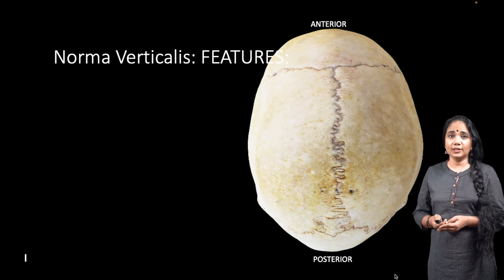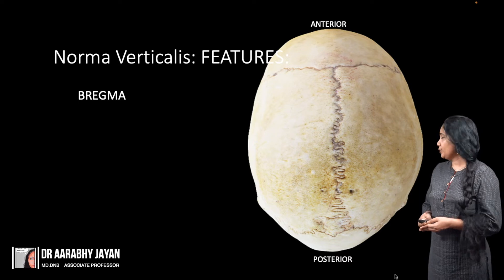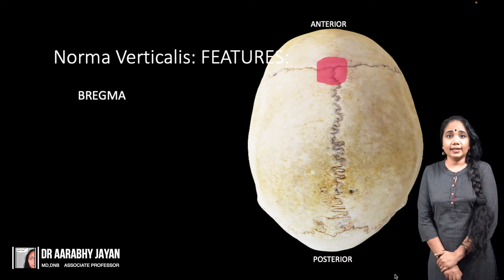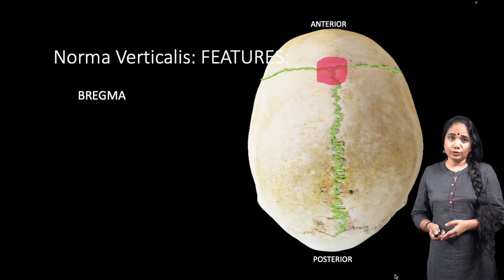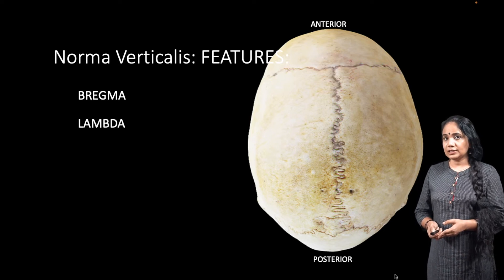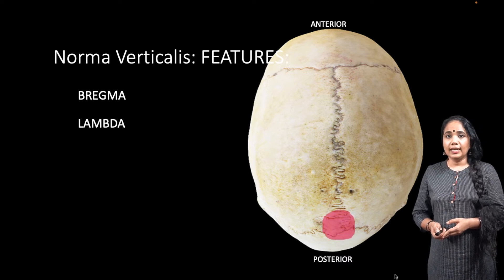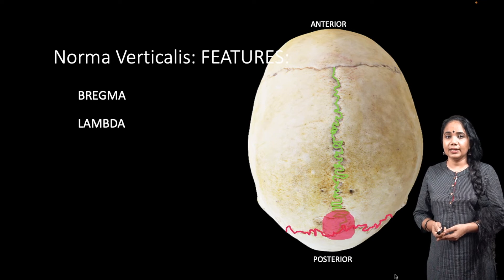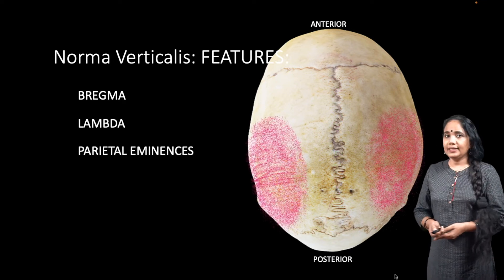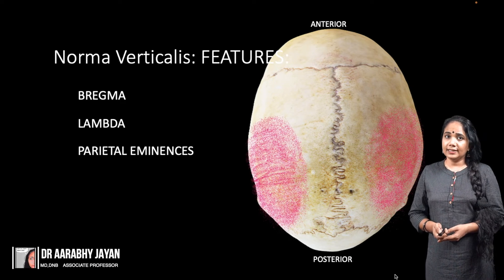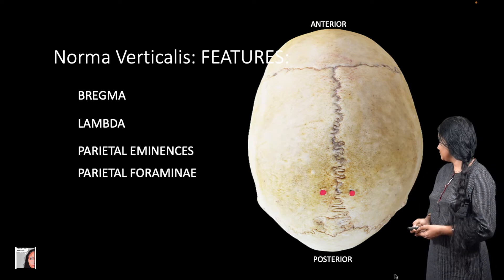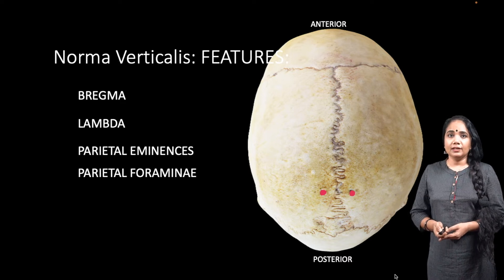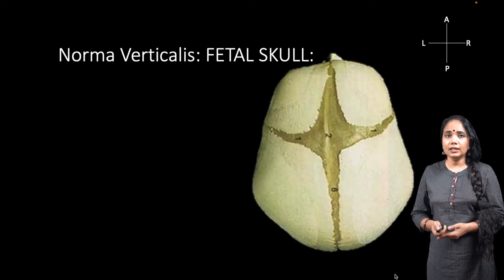The other features of norma verticalis include two key landmark points. The meeting point of the coronal and sagittal sutures is known as the bregma, and the meeting point of the sagittal and lambdoid sutures is the lambda. We also have two lateral parietal eminences on either side, and posteriorly on either side of the sagittal suture closer to the lambda are the two parietal foramina, through which emissary veins pass.